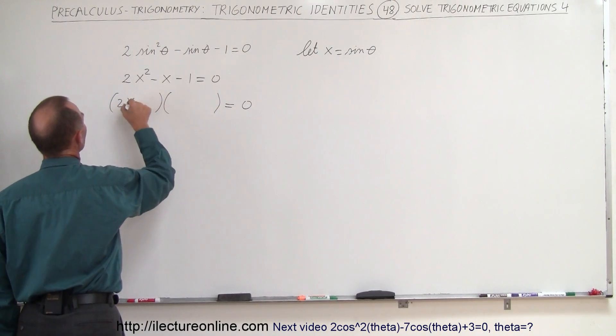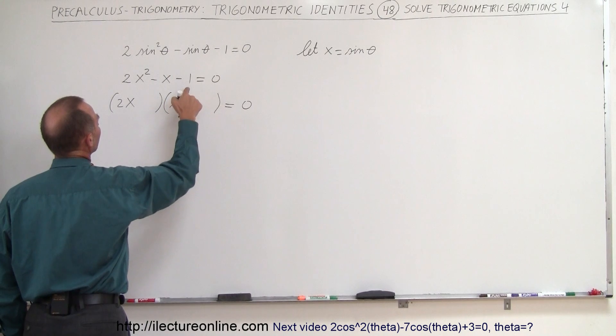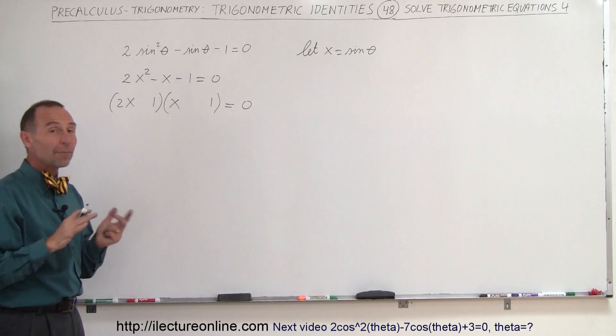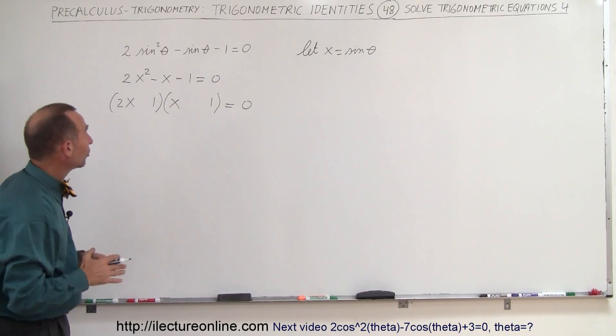We end up with a 2x and an x, and this has to be a 1 and a 1 because 1 times 1 is 1. Now there's going to be a positive and negative sign and so we can kind of do trial and error.